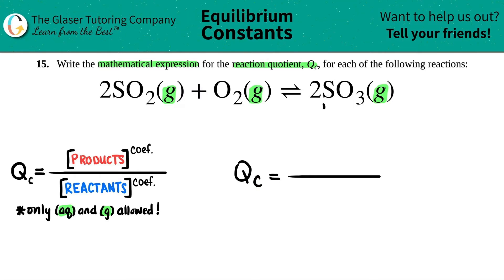So I have one product, SO3. So I'm going to just put bracket, SO3, close the bracket. And now I just have to make sure, am I going to raise it to any number? Well, in this case, I have a two coefficient in the front. So I do have to raise this to the second.